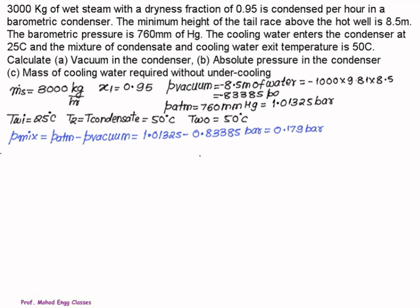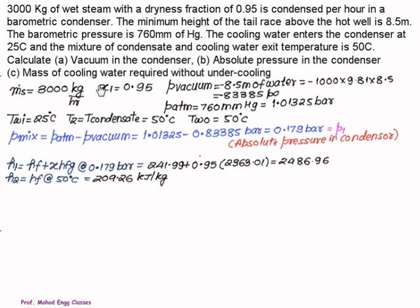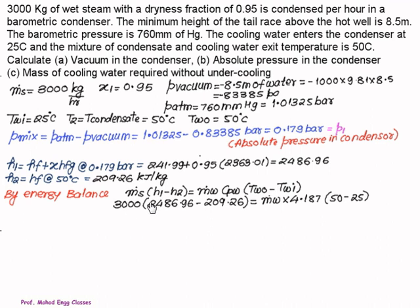We can record this value of 0.18 bar from steam table. To find the mass of cooling water we need to take the heat balance. For this we should know the enthalpy at inlet and enthalpy at outlet. Since the steam is wet, we will use the formula H = HF + X*HFG at a given pressure of steam, that is 0.179. Using steam table we get this value H1 = 2486 kJ/kg. At outlet of the condenser the temperature of the condensate is 50, so H2 equals HF which is 209.26 kJ/kg.